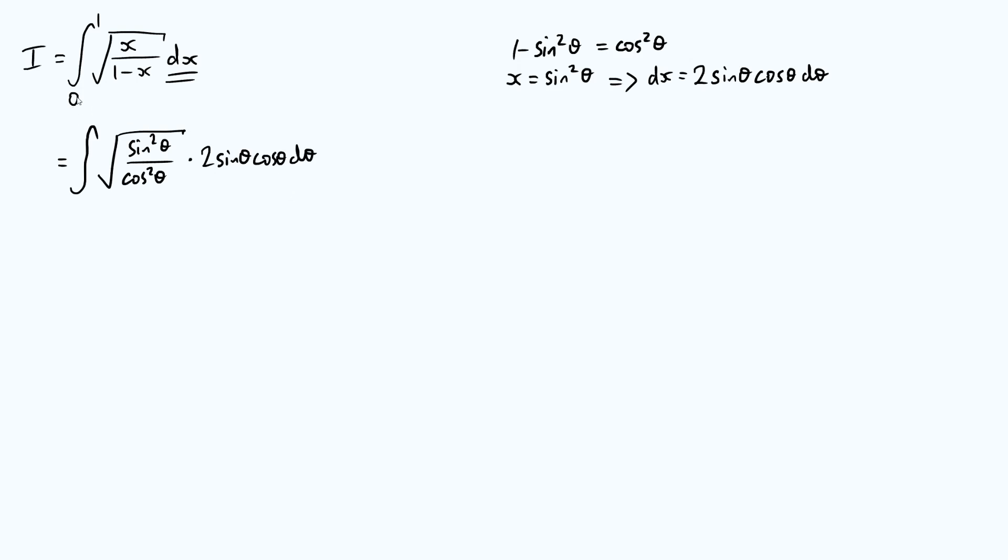Now, we also have to transform our limits. Okay, so we're integrating from the point where x is 0 to the point where x is 1. And so where x is 0, what is the value of theta? Well, we know that sine squared of theta has to be 0 because x is sine squared theta. And of course, there are infinitely many solutions to this,